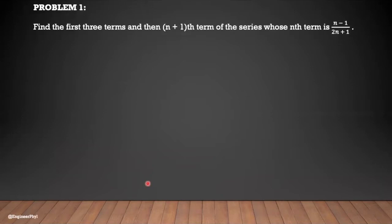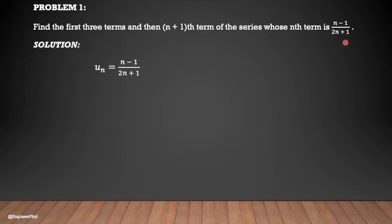Let's have some examples. Problem number one: Find the first three terms and the (n+1)th term of the series whose nth term is (n−1)/(2n+1). For our solution, let us write our nth term: u_n = (n−1)/(2n+1).